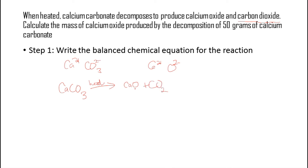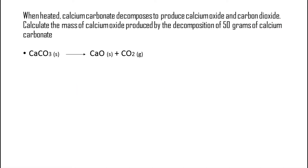Then we have to balance the equation, ensuring we have equal numbers of atoms of each element on both sides. On the reactant side we have 1 calcium; there is also 1 calcium on the product side. There is 1 carbon on the reactant side and 1 carbon on the product side. There are 3 oxygens on the reactant side, and on the product side 1 plus 2 makes 3. So our equation is already balanced.